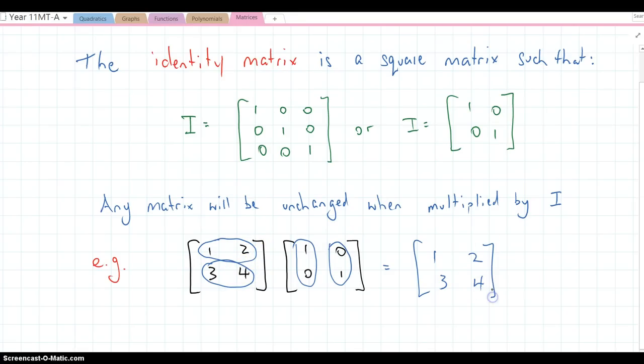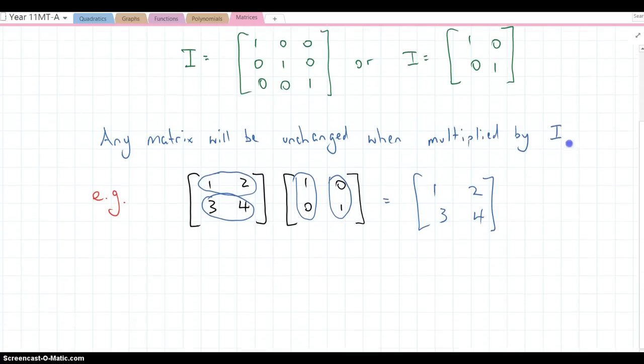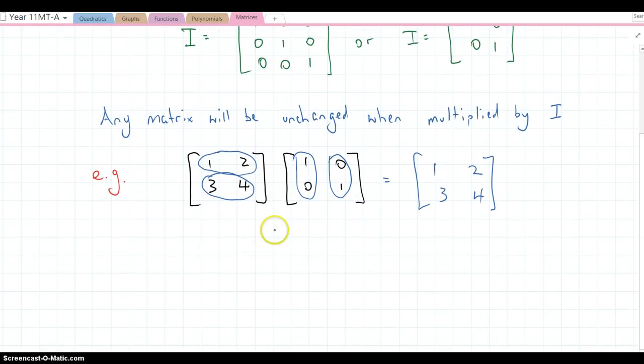So you can see there no change, 1, 2, 3, 4. Multiplying by the identity matrix left it as it started.